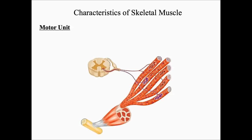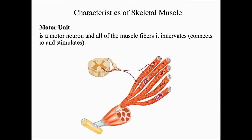That electrical impulse, or action potential, will specifically come from a motor neuron. In this illustration, there are two motor neurons — one purple and one red. The purple motor neuron innervates two muscle fibers, and the red motor neuron innervates three muscle fibers. We call this interaction between a motor neuron and the muscle fibers it innervates a motor unit.